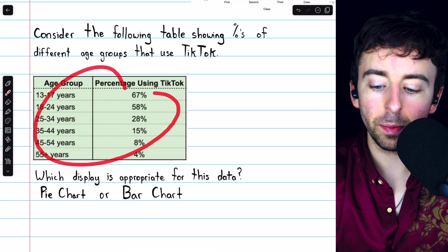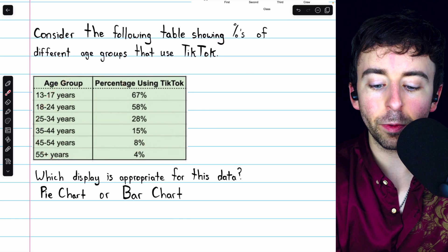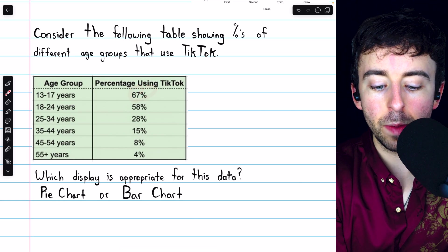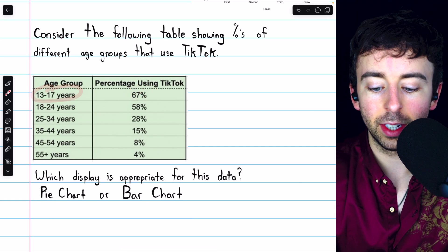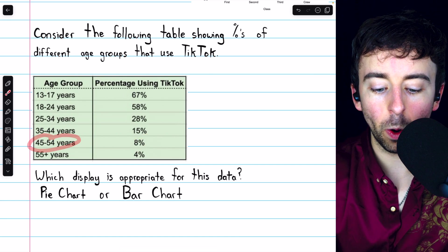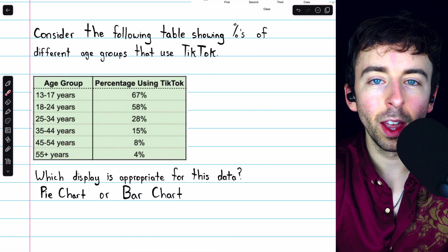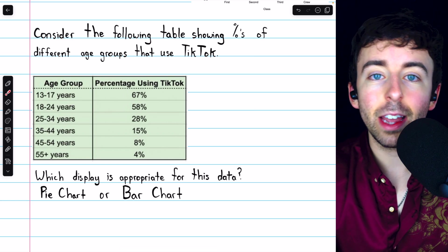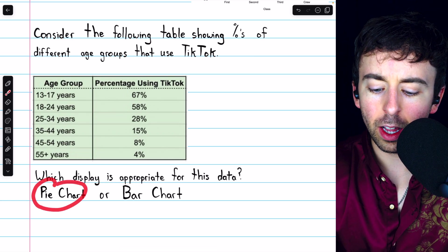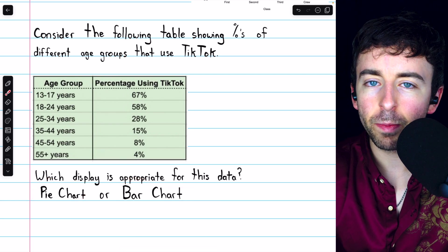Although, if you're not asked to do something specific, you might as well just use the raw counts, since you don't have to do the division necessary to calculate the relative frequencies. One last example here will help exemplify the difference between these two types of charts. Consider this table, which shows the percentages of different age groups that use TikTok. For example, 67% of people aged 13 to 17 use TikTok. 8% of people aged 45 to 54 use TikTok, and so on. If we wanted to use a display for this data, which display would be most appropriate? Pie chart? Bar chart? Does it not matter?